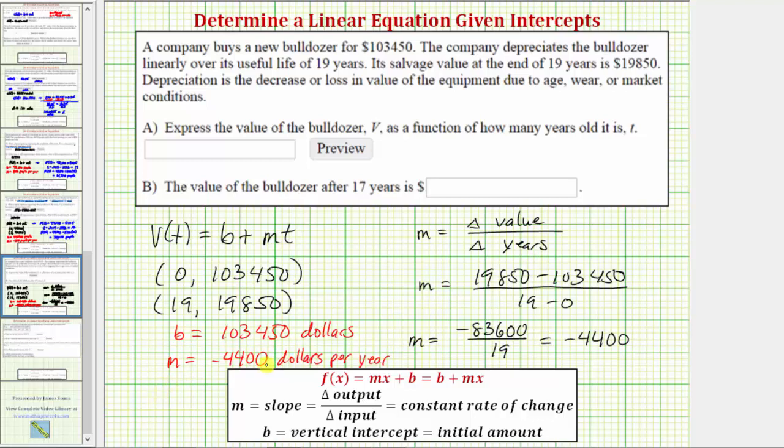Notice how the slope is negative, which should make sense because this is telling us the value is decreasing by 4,400 dollars each year, or the bulldozer is being depreciated, 4,400 dollars per year.